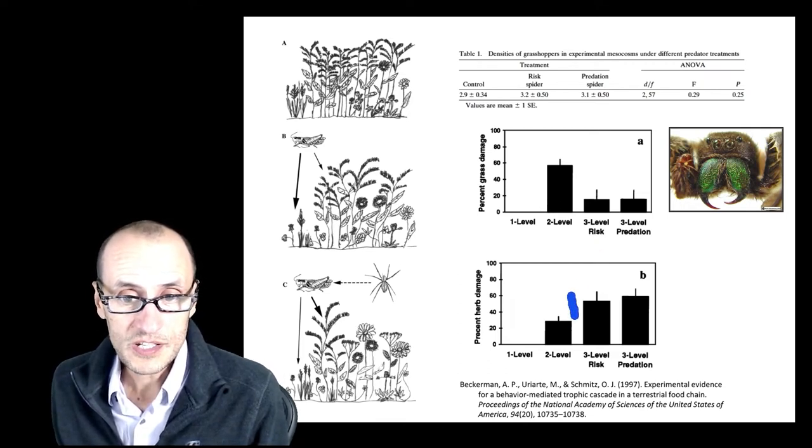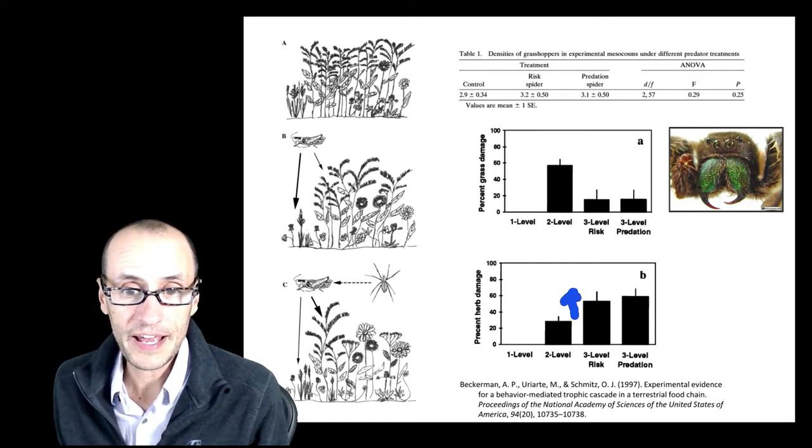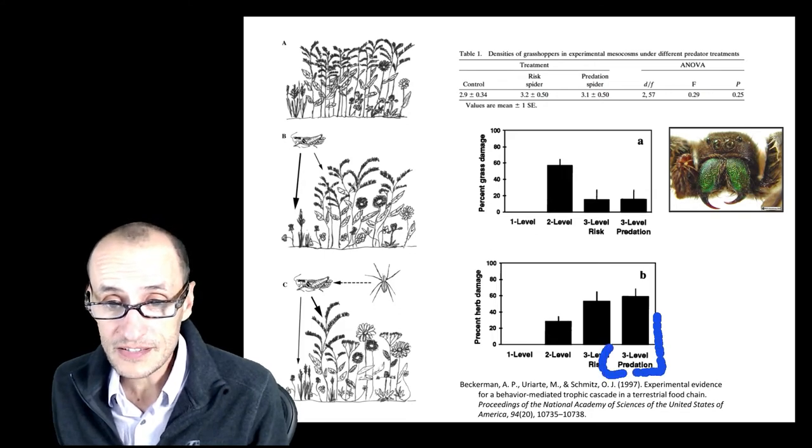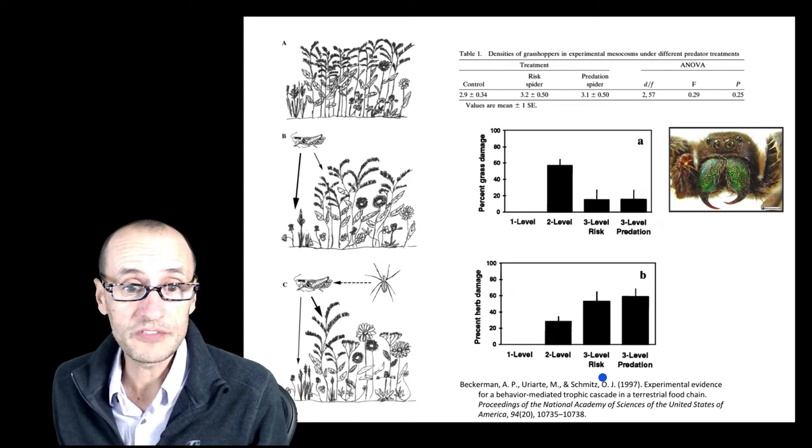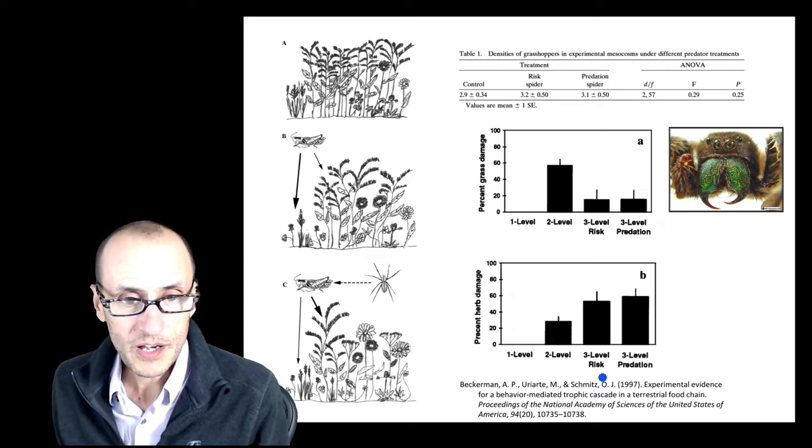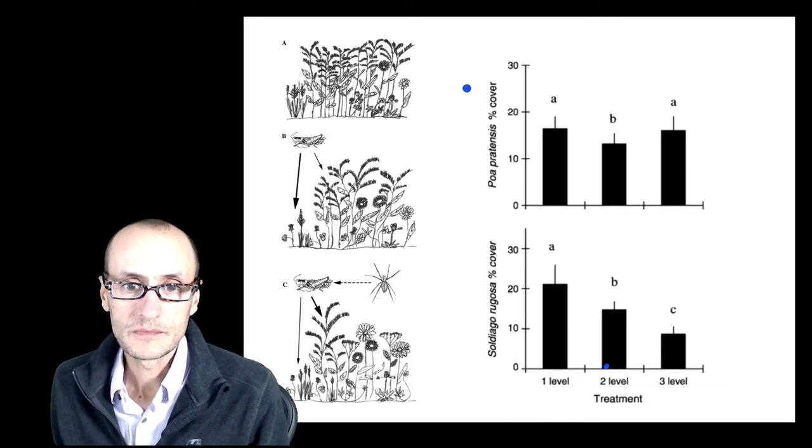Now, what you see here is the opposite actually happens to the broadleaf plants. That herbivory actually increases both in the presence of the real spiders and in the presence of the risk spiders. So what's going on?